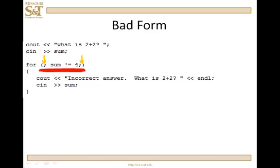We prompt the user with 'what is two plus two' and read in sum. Suppose somebody types in six. We check: is sum, which is six, not equal to four? That's true, so we output 'incorrect answer' and prompt again. Suppose they type in seven — the update of the loop control variable is expression three, which doesn't exist, so we check again: is seven not equal to four? True. This continues until sum is four, at which point four not equal to four is false and we jump out. But this is very bad form — you should never write a for loop like this.